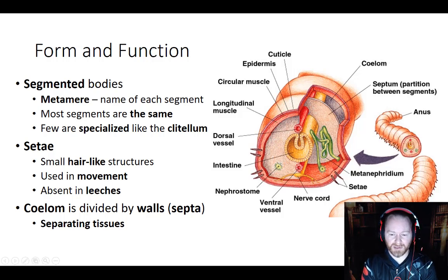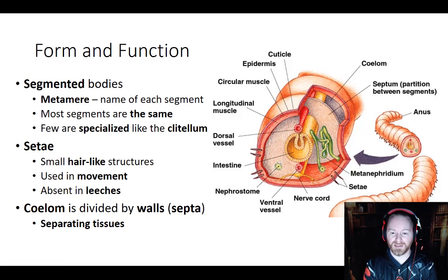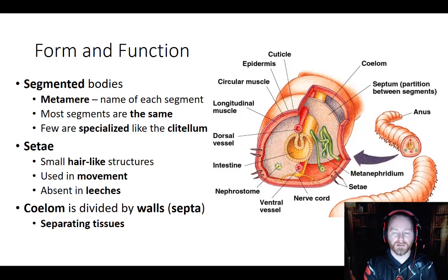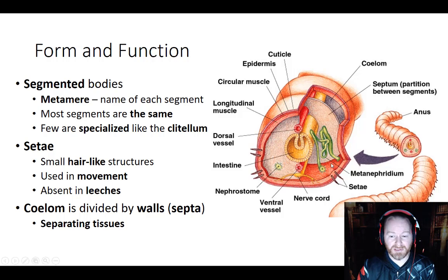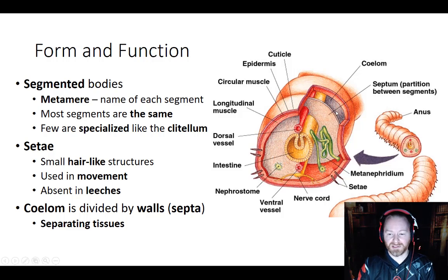The coelom — the body cavity — in each of the metameres is divided by a membrane called a septum. A septum is a generalized anatomical term for a biological wall that divides two chambers. Our diaphragm acts as a septum dividing the thoracic and abdominal cavities; in our heart, the division between the right and left sides is done by a septum. In annelids, septa keep each segment separate from the others, which you can see clearly in a dissection.